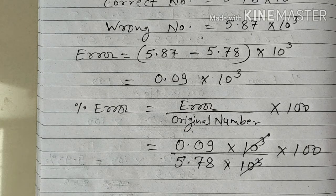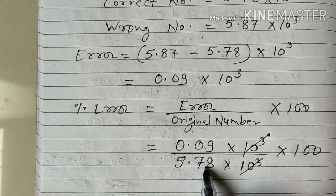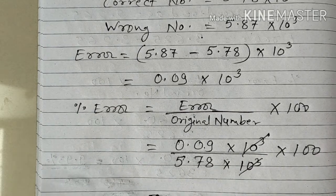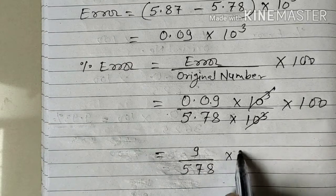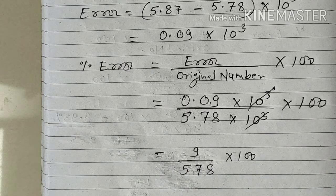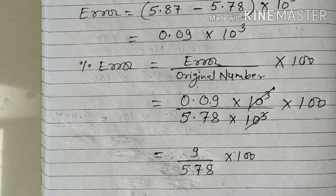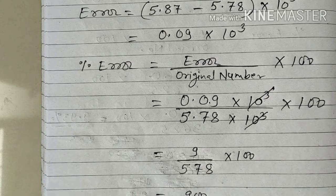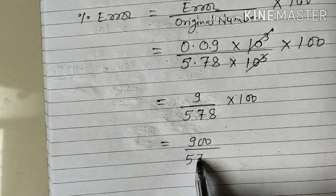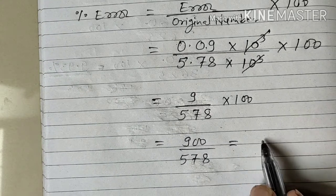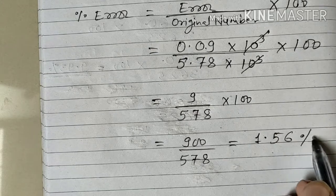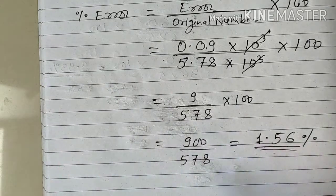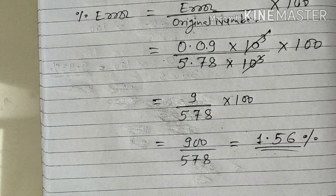Then, remove the decimal point from both numbers. So it becomes 9 upon 578, multiplied by 100, which gives 900 upon 578. When we make a division of these two, the final answer is 1.556%. You can divide it using the long division method. So, for today, we will stop here.